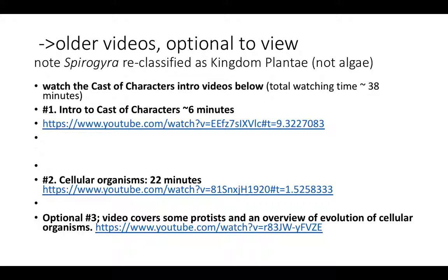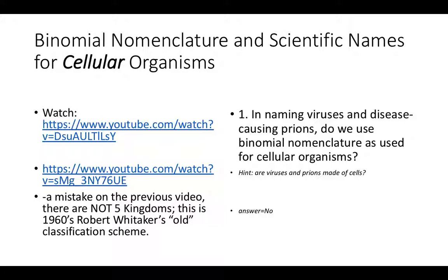Binomial nomenclature is the naming system we use to name all cellular organisms. It was developed by Linnaeus. It is important that you know how to provide the unique scientific name for each organism. The unique scientific name consists of two parts — thus two names, binomial nomenclature. The first part is the genus name, which is always capitalized, and then the second part is the specific epithet or species name, which is always lowercase.